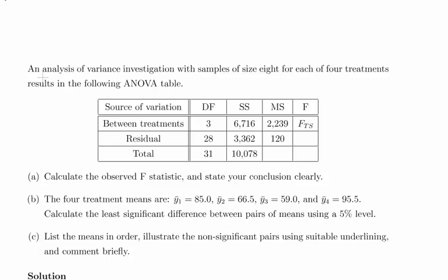Okay, in this presentation we are going to look at Analysis of Variance. An Analysis of Variance investigation with samples of size 8 for each of the four treatments results in the following ANOVA table. So this is a quick remark there - there are four treatments and there are eight in each. That's important actually. So overall there are 32.